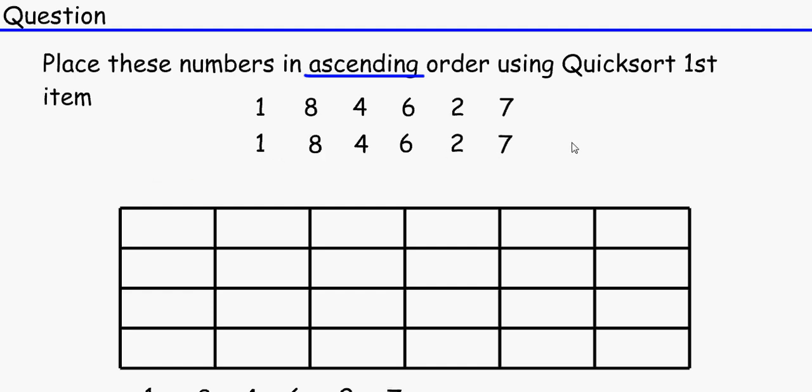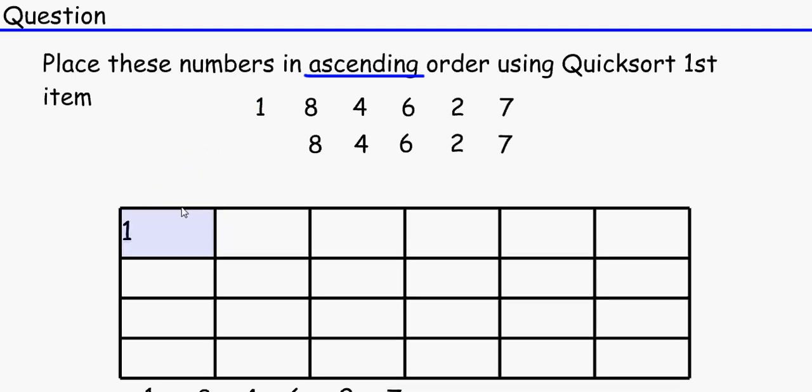So what you need to do first is you need to select the first number which is number one and then you've got to scan the rest of the numbers and see if there are any other numbers which are smaller than one. I'm going to put the one in this box over here. And as you can see there aren't any numbers which are smaller than one. So one was our pivot and we're just going to colour that blue. That's number one. And then we've got all these other numbers here which are on the right of it.